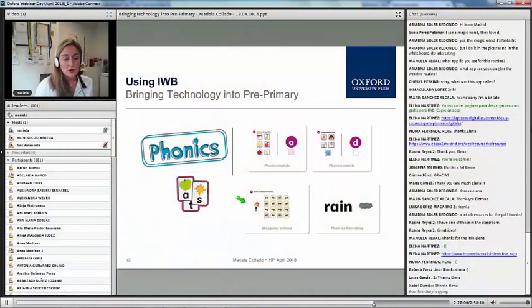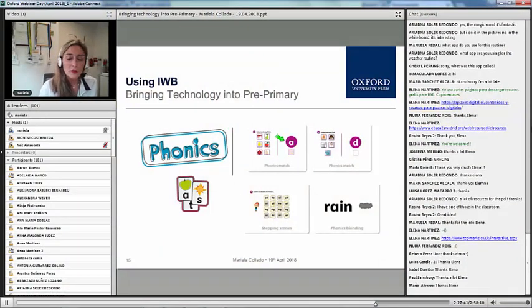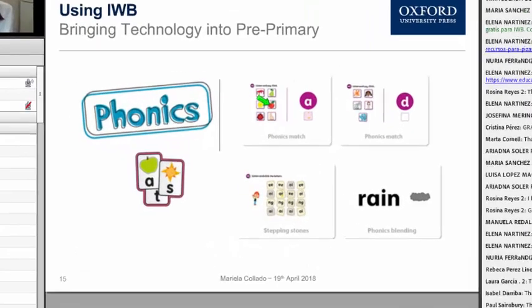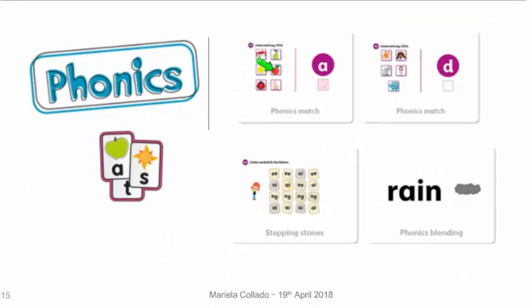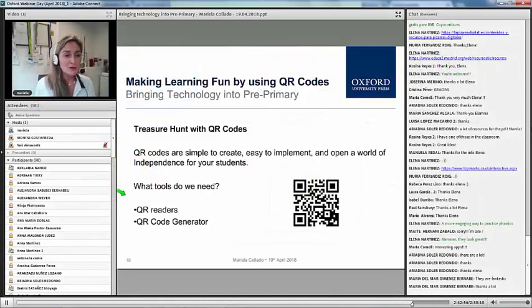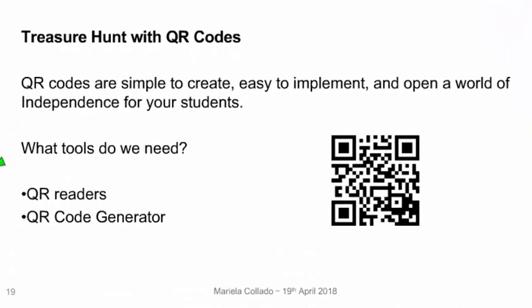What else can we do with interactive whiteboards? We have, for example, recordings. A very simple activity could be matching: they click on the sound, listen to the sound, and then have to recognise the picture that contains or starts with that sound. I've also been doing QR codes — they're very simple to create and very simple to do in class. I display these QR codes around the classroom, students move around, they see what picture they can find, and they say the word.